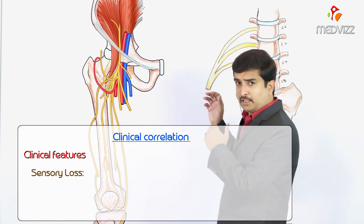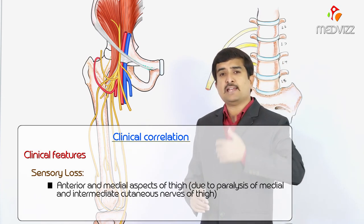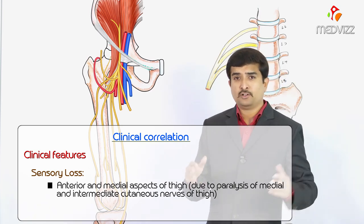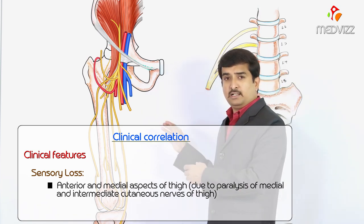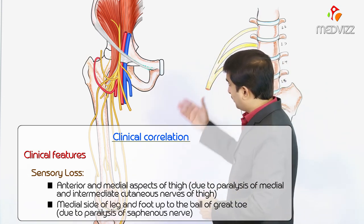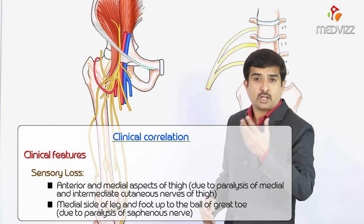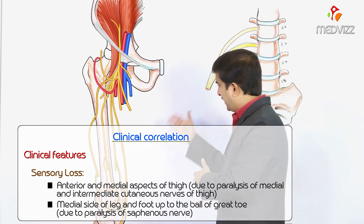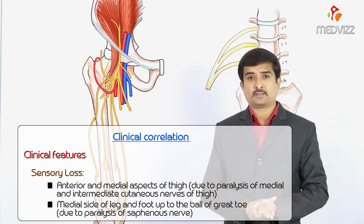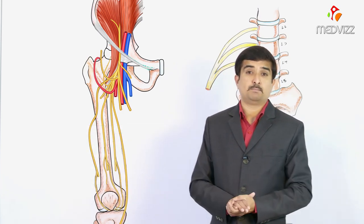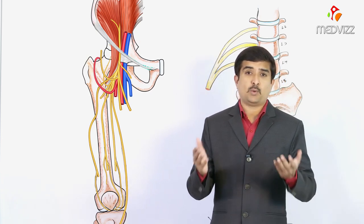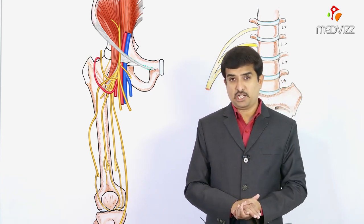Sensory loss is typically seen over the anterior and medial aspects of the thigh, mainly due to loss of the medial and intermediate cutaneous nerves of the thigh. Sensory loss on the medial side of the leg and foot up to the ball of the great toe is due to injury to the saphenous nerve. This completes the detailed anatomy of the femoral nerve, its innervation, and clinical application.